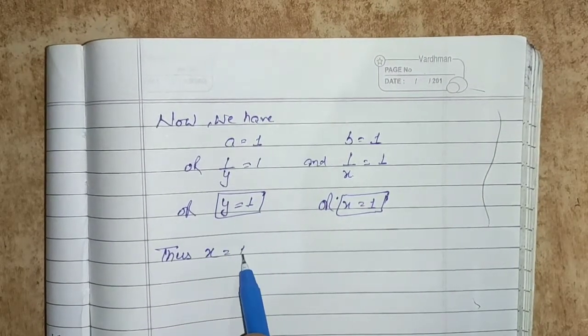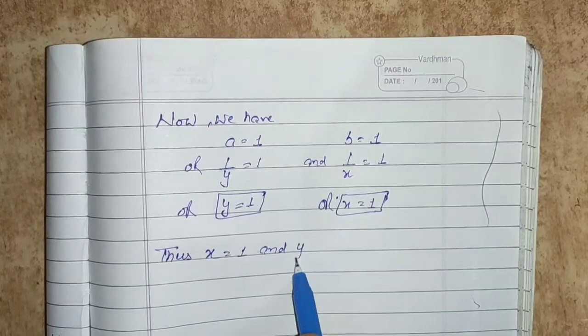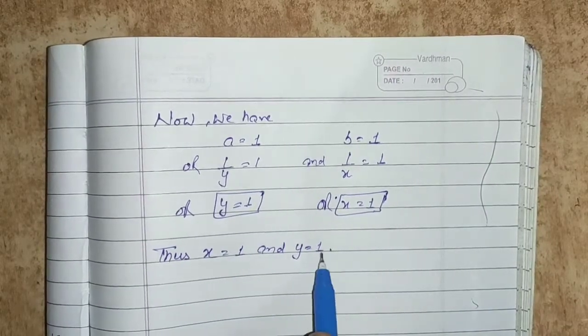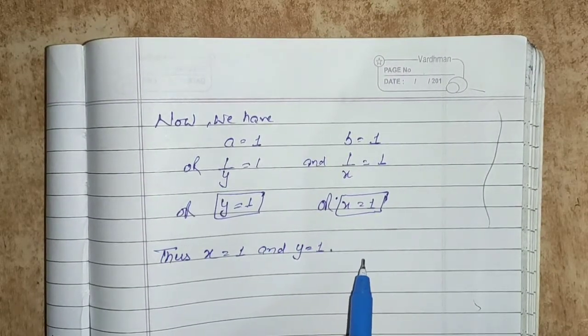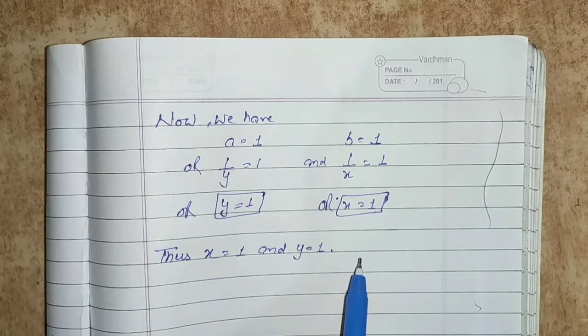Thus x equals to 1 and y equals to 1 is the required solution of the pair of linear equations. This is all about part number 5. You can pause the video and note it down.